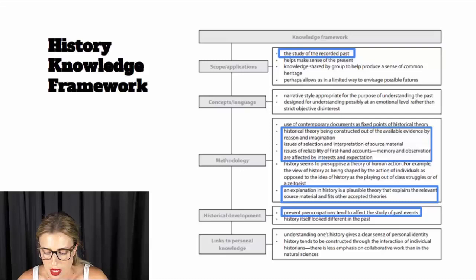If we also have a look at the bottom point of methodology there, you can see that in contrast to some other areas of knowledge, an explanation in history is a plausible theory that explains the relevant source material and fits other accepted theories. So it can be, and it is the case in history, that for one event we might have many conflicting or competing theories and it's very difficult or basically impossible to understand which is the correct theory because any theory in history, as long as it's plausible and backed up by evidence, can be accepted, even if it competes with another theory.